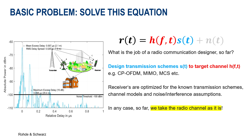Therefore, we came up with concepts like cyclic prefix OFDM, MIMO schemes, or specific modulation and coding schemes, based on radio channel models we achieved or derived from simulations and channel sounding measurements. Receiver architectures are designed as well to allow the best possible reception for the given transmission schemes and radio channel assumptions.